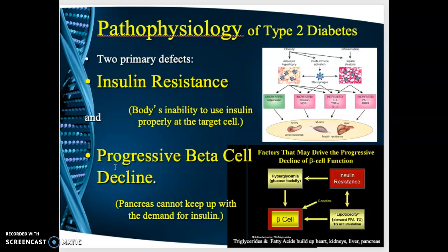In type 2 diabetes pathophysiology, there are two primary defects. The first is insulin resistance — the body produces insulin, but target cells or receptor sites are not sensitive to it, so blood sugar builds up. Exercise can make those receptor sites more sensitive again, but if the person doesn't change their eating and exercise habits, insulin resistance persists. The second defect is progressive beta cell decline — beta cells wear out from being overworked, constantly producing more and more insulin.